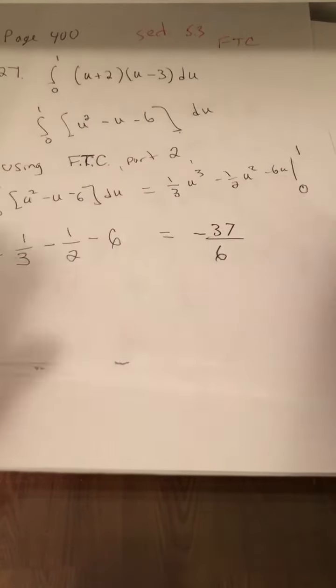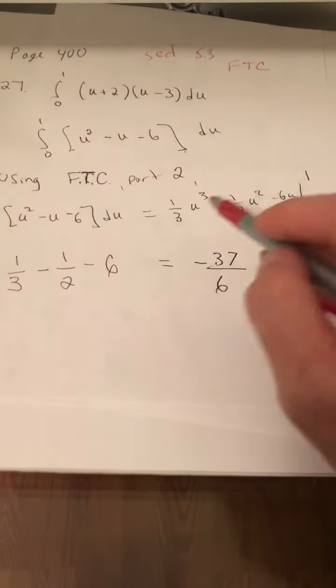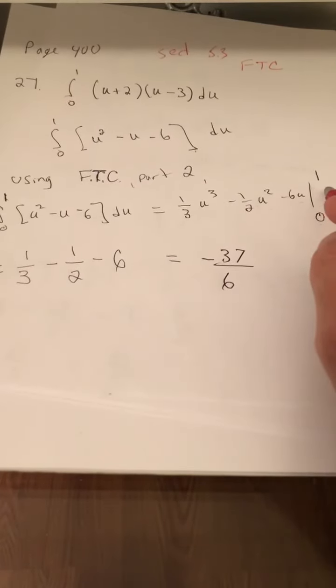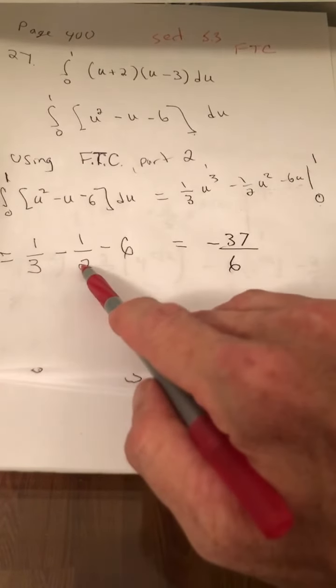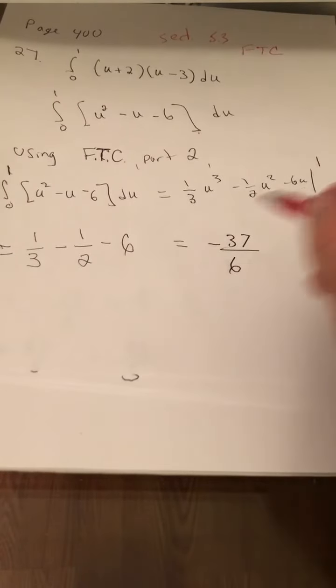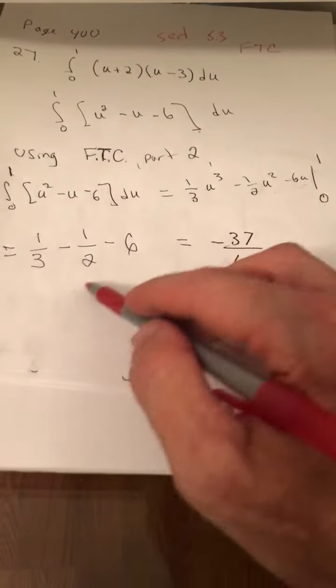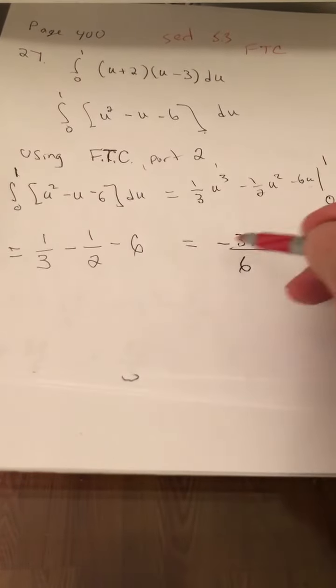For this particular problem, it's actually pretty simple. If I plug in 1, what I get is one-third minus one-half minus 6. And if I plug in 0, I get 0. I didn't write that here. The next thing would have been minus 0, which is 0. So, you combine these terms, you get negative 37 over 6.